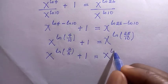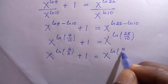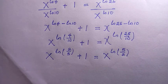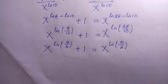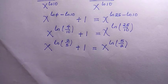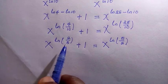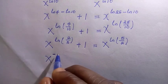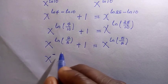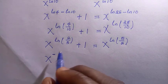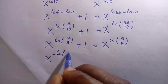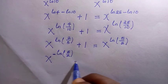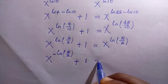This simplifies to x raised to the power of ln(5/2). I want the powers to be uniform as 5 over 2. On the left side, taking the inverse gives negative ln of 5 divided by 2, so we have 5 over 2 plus 1, crossing to x raised to the power of ln(5/2).